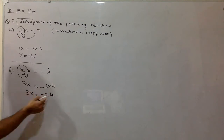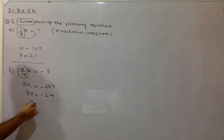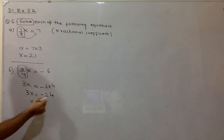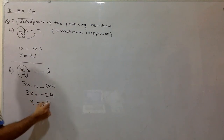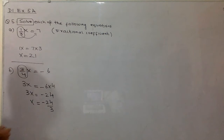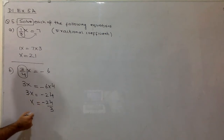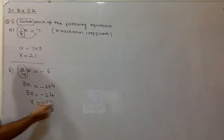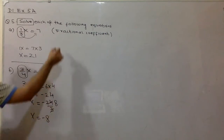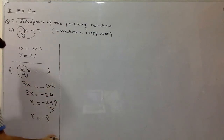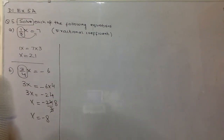Now move this 3 to the right side of the equation. When you move this 3 to the right side, it will divide 24. This 3 divides 24, so your answer will be x equal to minus 8. This is the solution for part B.